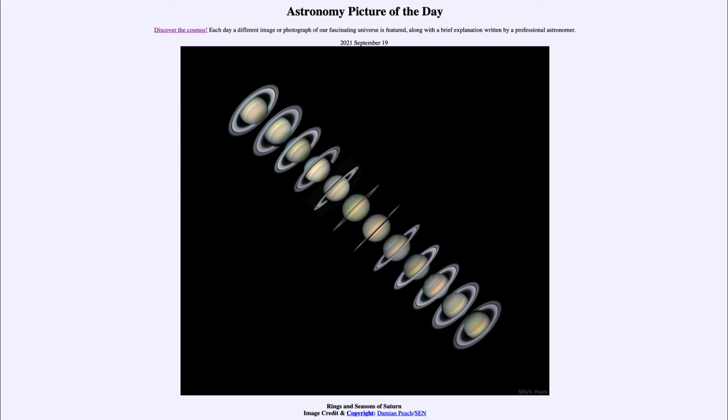As the relative tilt that we see changes as it moves around, we see a better view of the rings or a worse view of the rings.